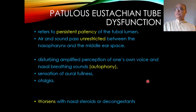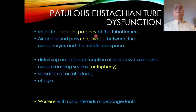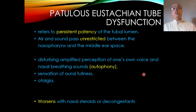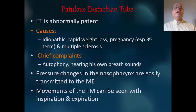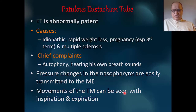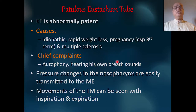Patulous Eustachian tube dysfunction refers to persistent patency of the Eustachian tube lumen, where air and sound pass unrestricted between the nasopharynx and middle ear space. This causes amplified perception of one's own voice — autophony — and sensation of aural fullness. Even otalgia can occur, and symptoms worsen with nasal steroids or decongestants. The Eustachian tube is abnormally patent; causes include idiopathic, rapid weight loss on a diet, pregnancy especially in the third trimester, and multiple sclerosis.